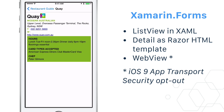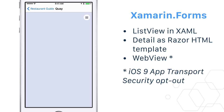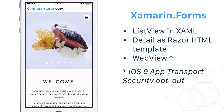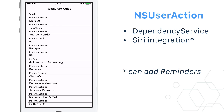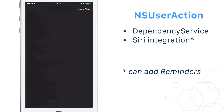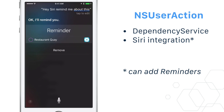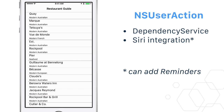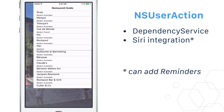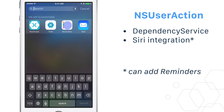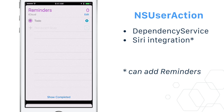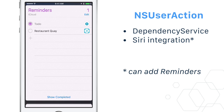Check out how the NSUserActivity class, also used for handoff, can be used for Siri integration. I added a reminder that deep links into the app for this restaurant. Let's close Siri and go back to the Reminders app. If I tap on the icon, I go directly into the app restaurant page.